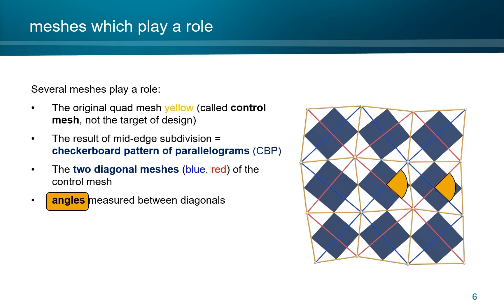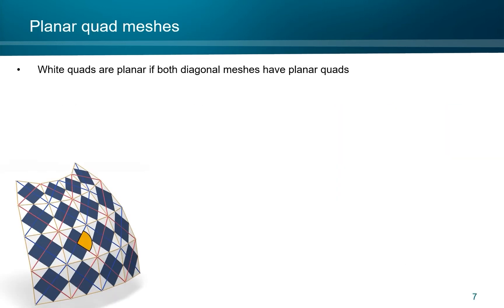Angles are simply measured between diagonals in the faces of the control mesh. Together with mesh fairness, this is a simple way to control angles in quad meshes. Note that a white face in the checkerboard pattern is a scaled version of a face in one of the two diagonal meshes.